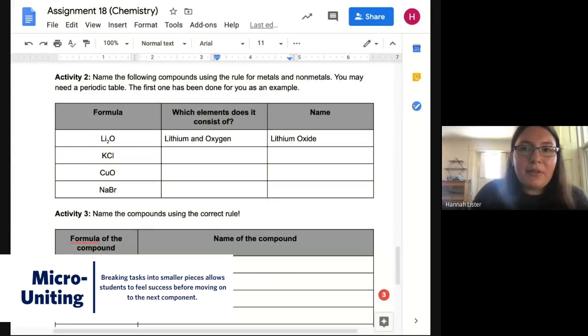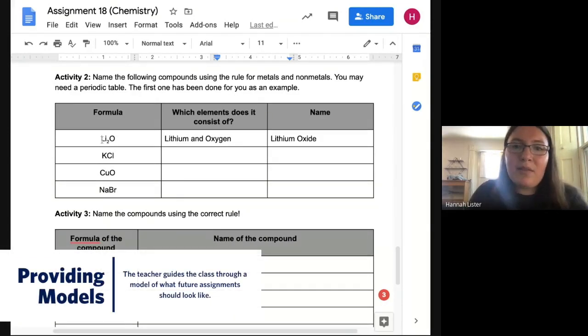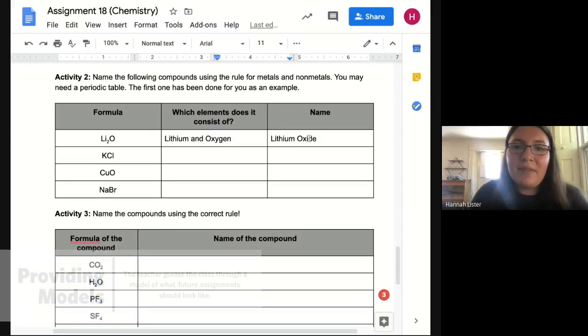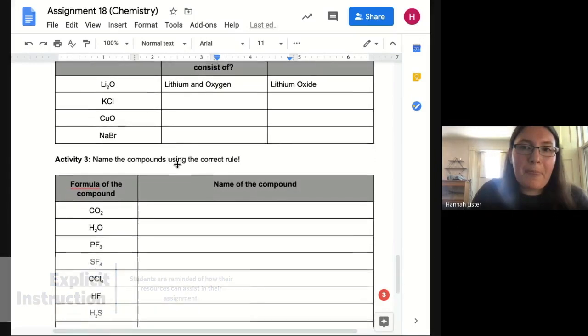Activity two is about you actually naming the compound. So again, I did the first one for you. So this right here, Li2O is made up of lithium and oxygen. And so the name is going to be lithium oxide. And then you're going to name them based on the rules that you wrote in your two column notes from the Google Slides presentation.